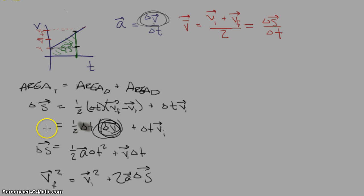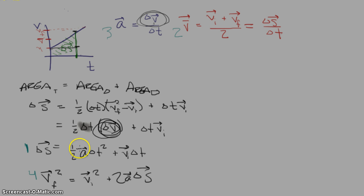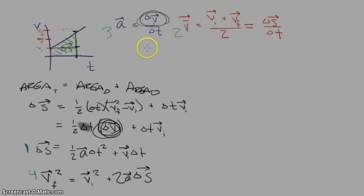So we have four main equations. Equation one is missing final velocity — so when I don't care about final velocity, that's probably the equation I'll pick. Equation two doesn't have acceleration in it, so when I don't care about the rate of acceleration I'll choose some form of equation two. Equation three doesn't have any position information, so if I don't care about position I'll choose equation three. Equation four doesn't have time in it, so when I don't care about time I'd pick that one.